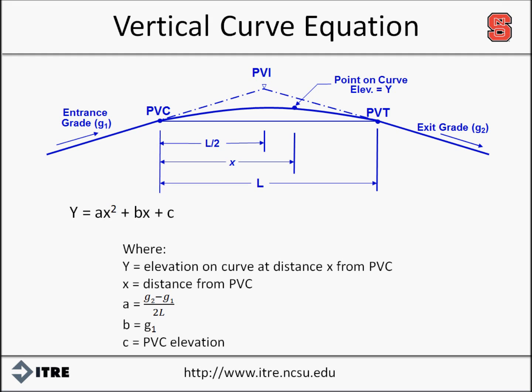To customize the parabolic equation for finding the elevation of any point along a vertical curve, the a term is equal to g2 minus g1 divided by 2 times the length of the curve, the b term is equal to the grade of g1, and the c term is the elevation of the PVC.